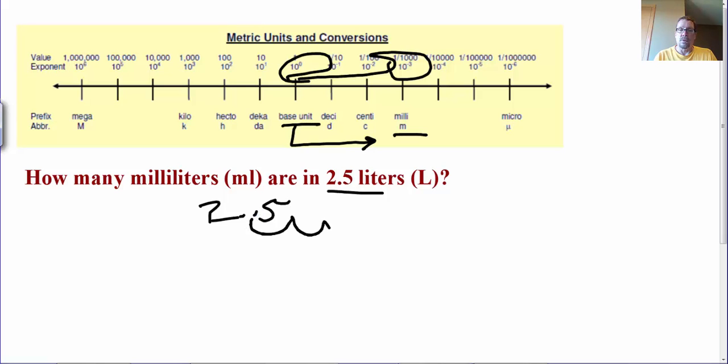1, 2, 3. Fill in placeholder zeros. And what that turns out to be is 2,500 milliliters. There's my answer.